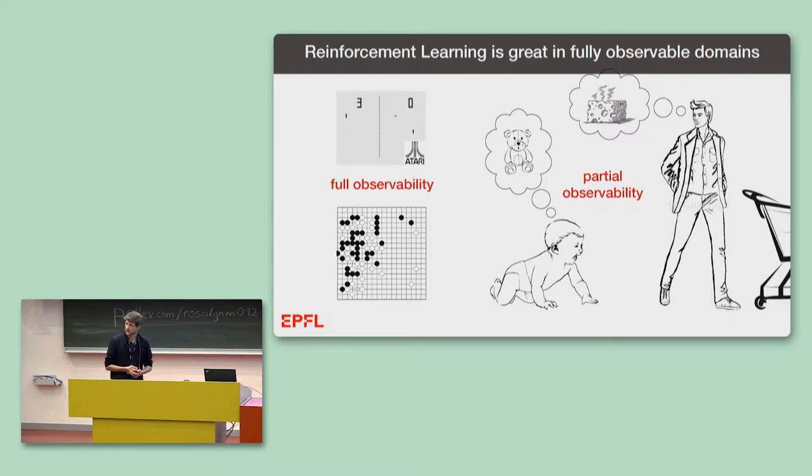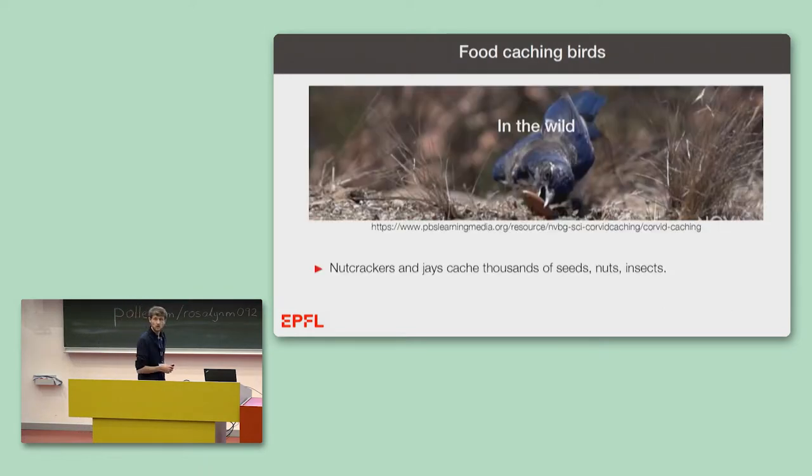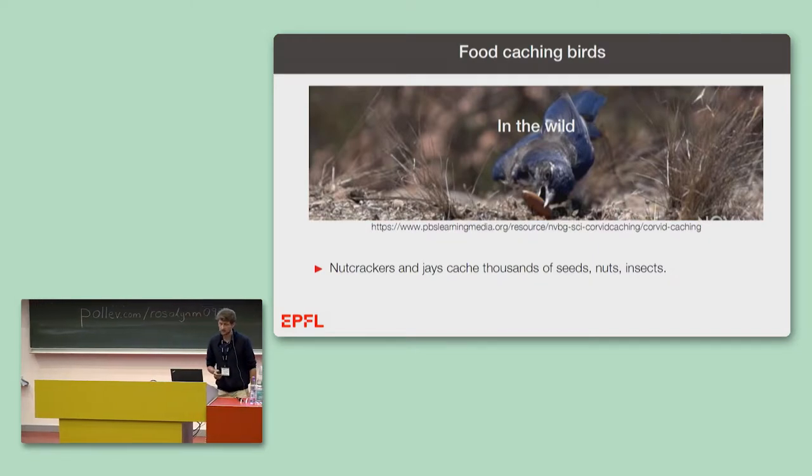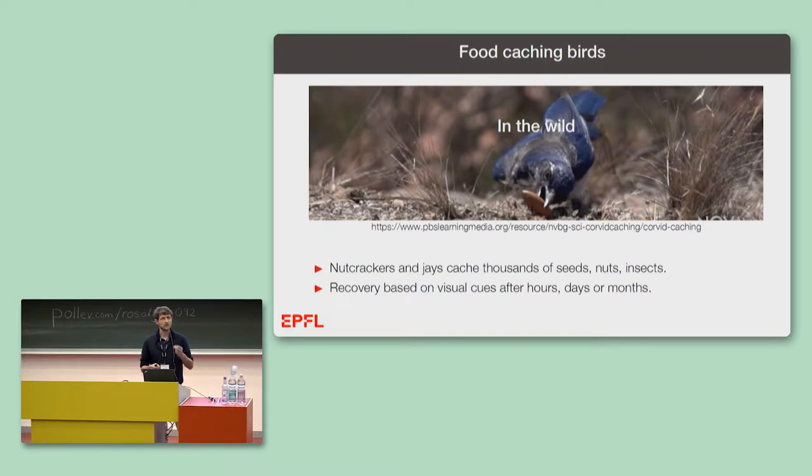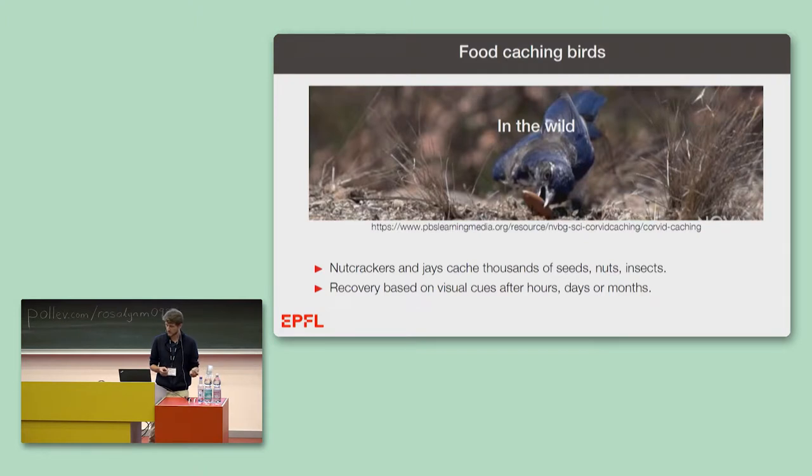To shed light on this question, it may be interesting to look at another species that excels in a partially observable domain. Food caching birds, like nutcrackers and jays, cache thousands of food items in one year - seeds, nuts, insects - in different places in the environment. Recovery is based only on visual cues, and with a very high success rate, they recover their own caches after hours, days, months, sometimes even covered under a few centimeters of snow.